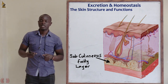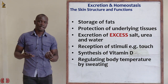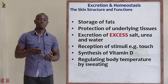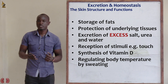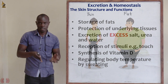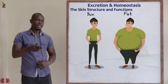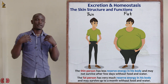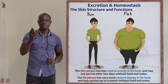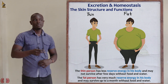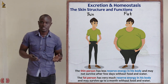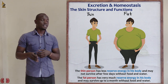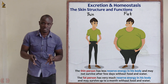During starvation or when someone is feeling hungry, these fats are going to be broken down — oxidized and broken down to form glucose — and this glucose is going to give the body its energy. For example, if we take a thin person and a very fat person and place them in a desert for some days, it will take only about one week for the thin person to succumb to hunger, while it might take the fat person about one or two months to die.